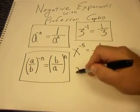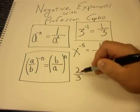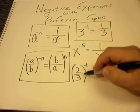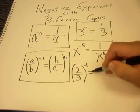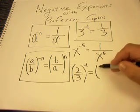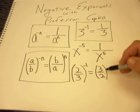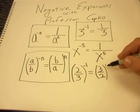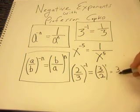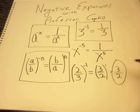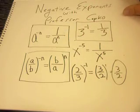To give you an example of that, if I had 2 thirds, and let's say the whole thing is to the negative 1, and you got this as an answer, don't leave it that way because that would be technically incorrect. You need to flip it over, and it's now to a positive 1, which we wouldn't write. You can just write 3 halves. Your instructor may want you to reduce that 3 halves, and I'll do a video later on how to reduce improper fractions such as that. Okay, so we've got two rules so far. Let me show you another rule.